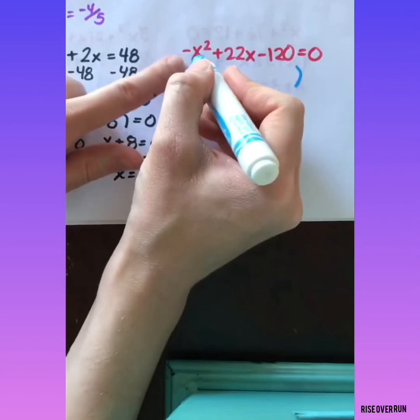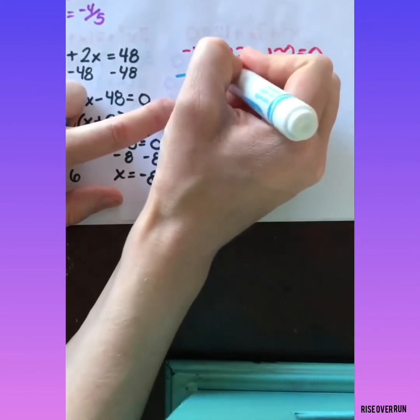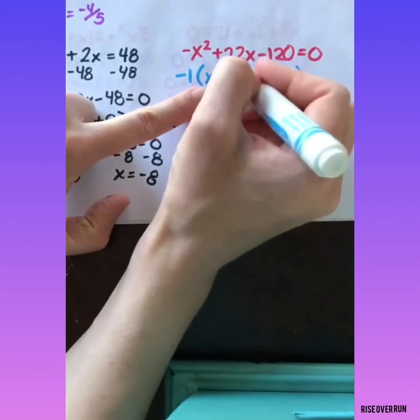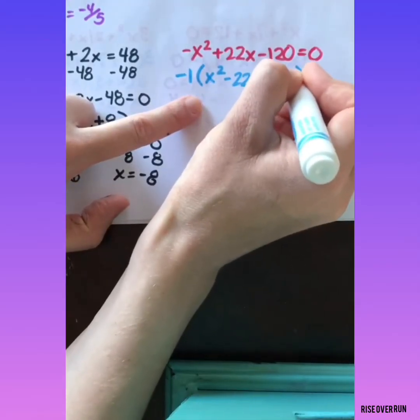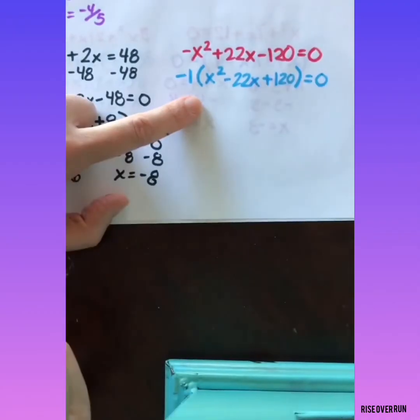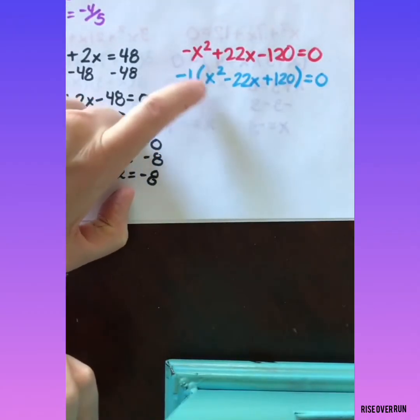So I need to divide every term by negative 1. That will give me a positive x squared, negative 22x, and positive 120.